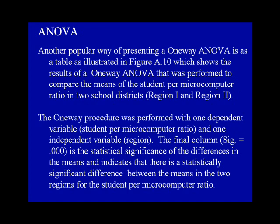Another popular way of presenting a one-way ANOVA is as a table, as illustrated in figure A.10, which shows the results of a one-way ANOVA performed to compare the means of the student per microcomputer ratio in two school districts. The one-way procedure was performed with one dependent variable — the student per microcomputer ratio — and one independent variable, the region. The final column, significance equals 0.000, indicates that there is a statistically significant difference between the means of the two regions for the student per microcomputer ratio.